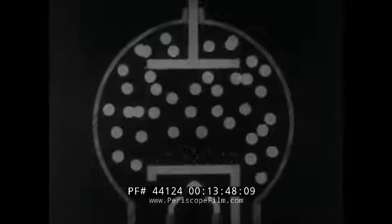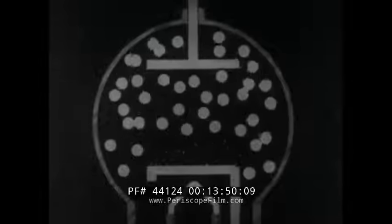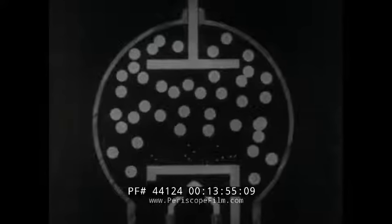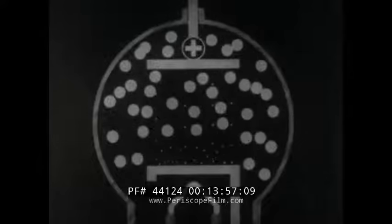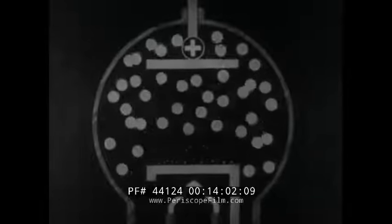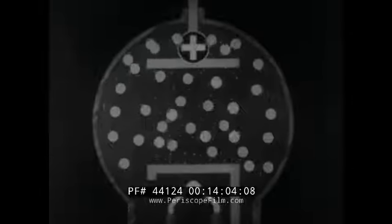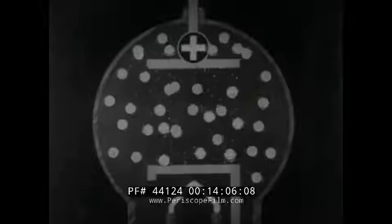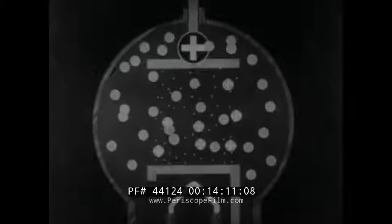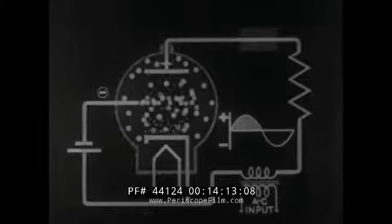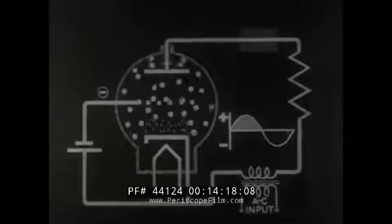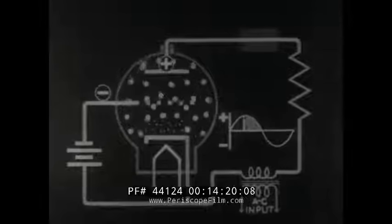In gas-filled tubes, as in vacuum tubes, electrons are emitted by the cathode and are attracted by the positively charged anode. Ionization of the gas in the tube causes the tube to conduct current freely. With the addition of a grid, the gas-filled tube provides a rapidly acting control of the current in the circuit of which the tube is a part.